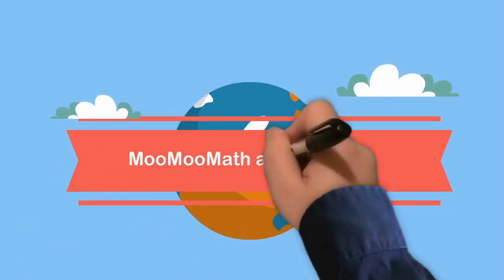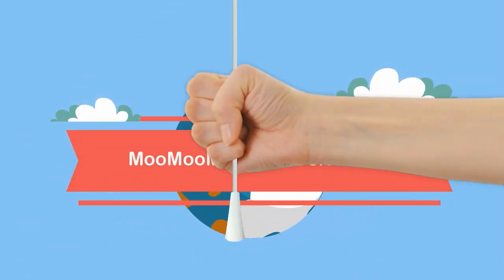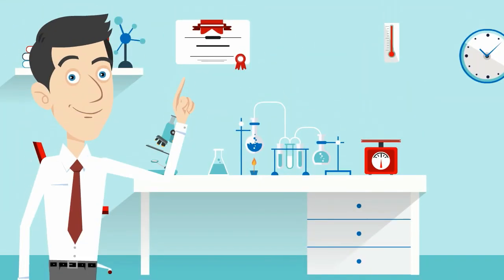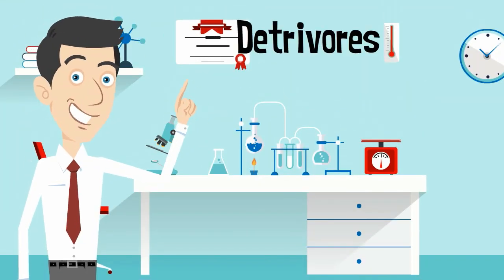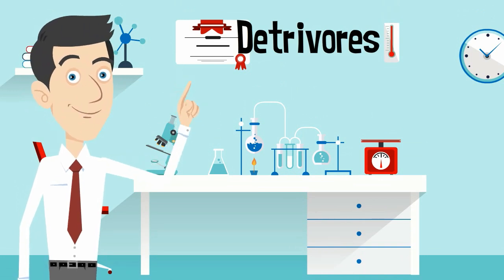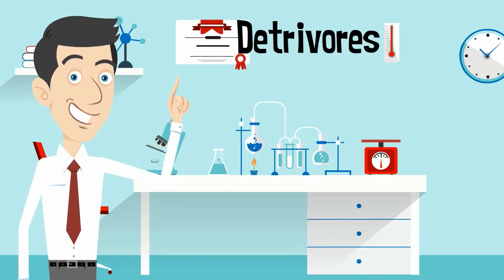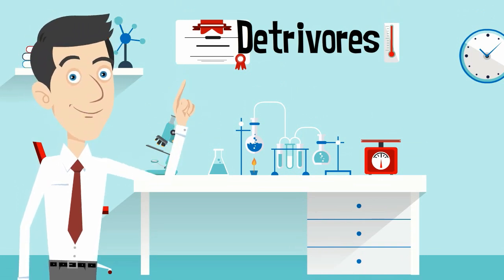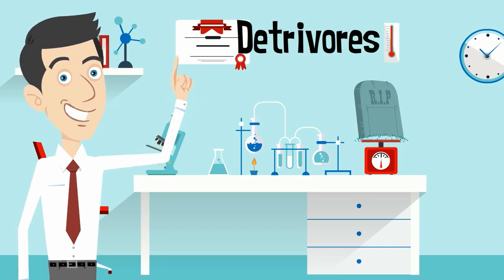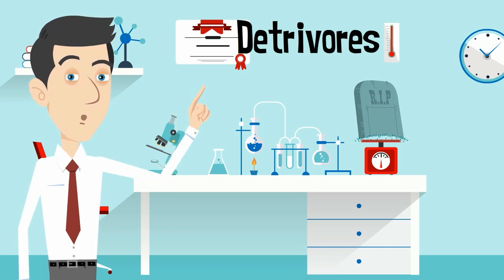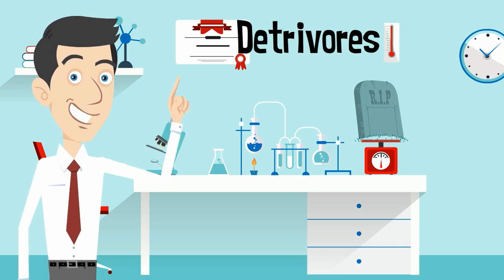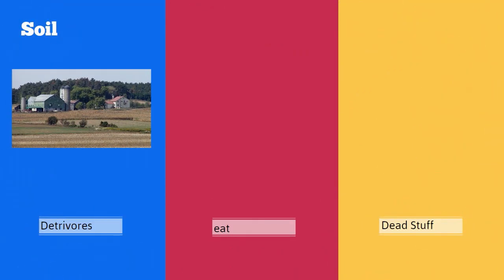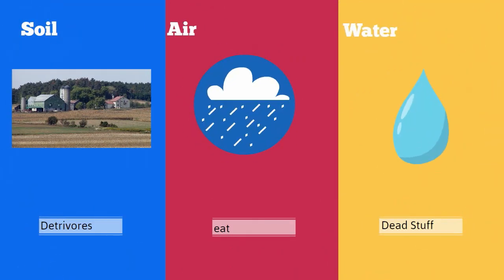Welcome to MooMooMath and Science. In this video I would like to talk about detritivores. Detritivores are heterotrophs that eat fragments of dead matter in an ecosystem. As a result, this helps return nutrients to the soil, air, and water so they can be reused by other organisms.